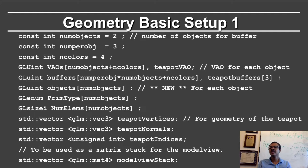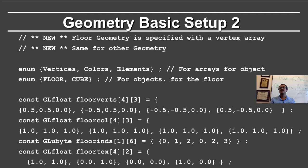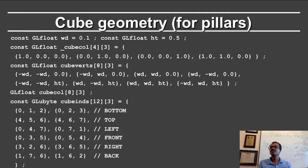We define the model view stack as a vector of mat4 matrices that we push and pop. We define an enum for vertices, colors, and elements, and an enum for the floor and the cube. The floor is at z equals zero, with vertices at (0.5, 0.5), (-0.5, 0.5), (-0.5, -0.5), and (0.5, -0.5). The floor colors are uniform white, RGB = (1, 1, 1). The floor indices define two triangles, and texture coordinates go between 0 and 1.